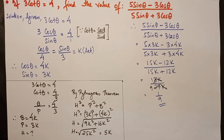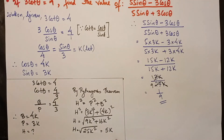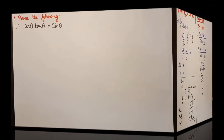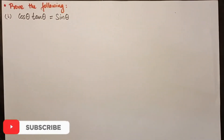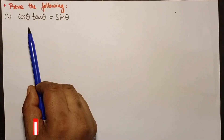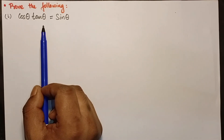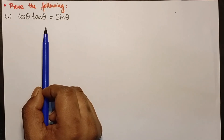Now you can find cosθ and sinθ from these sides, substitute into the expression, and get the answer. After this chapter, we'll move to trigonometric ratios of standard angles, so please be thorough with the formulas.